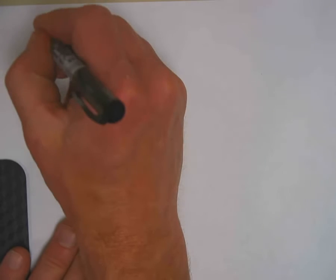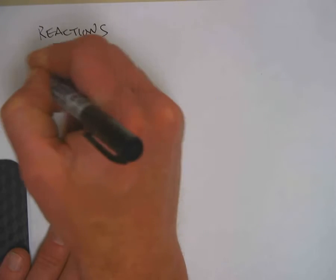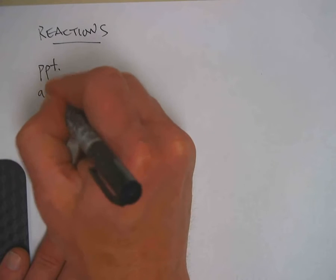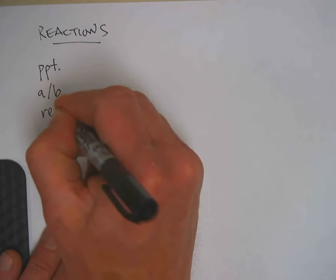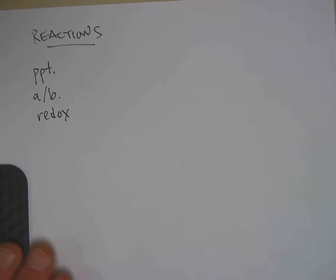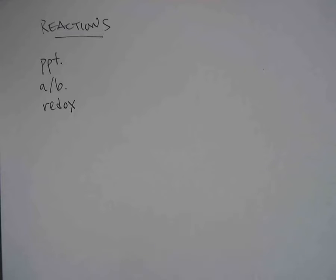Second thing that you need to know is the three basic types of reactions. Three basic types of reactions. And these are precipitation reactions, acid-base reactions, and oxidation reduction or redox reactions. And classifying what three types are and completing those reactions is super-duper important.